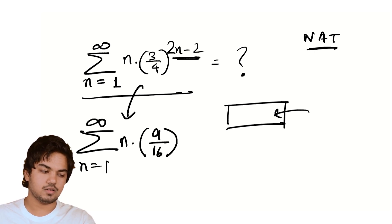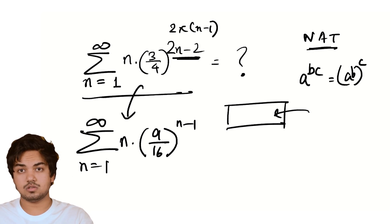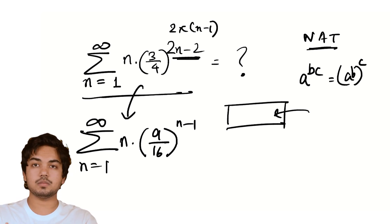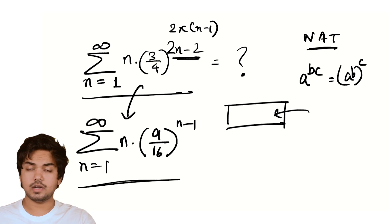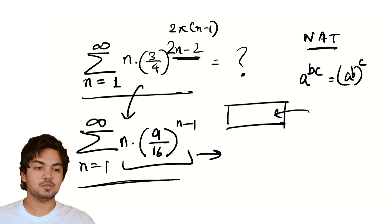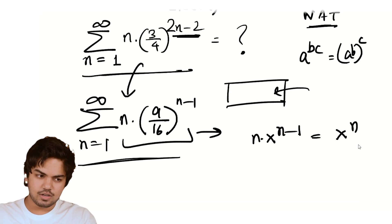2n minus 2 is nothing but 2 times n minus 1, right? And what do we know? a to the power bc is a to the power b to the power c. That's just how exponents work. It's a generalization of the fact that when you multiply exponents they add. So that's all I've done here. I've taken the 2 out and written it like this. You might ask what's the advantage? The advantage is that this is a nice form. It looks like n times x to the n minus 1, and you might know that this is the derivative of x to the power n.